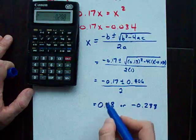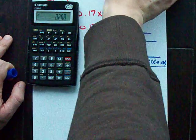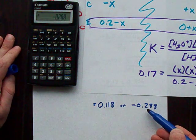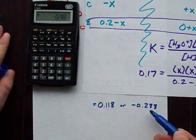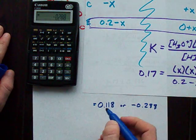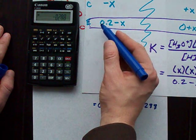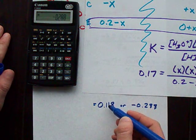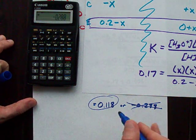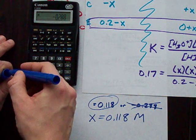So, if X is either one of these numbers, what you'll notice in our ICE table is that we can't lose negative 0.288 moles per liter of iodic acid. We can lose 0.118 moles per liter of iodic acid because we started with 0.2 and that's less than that. That's not a valid answer. This is, which means X is 0.118 moles per liter.